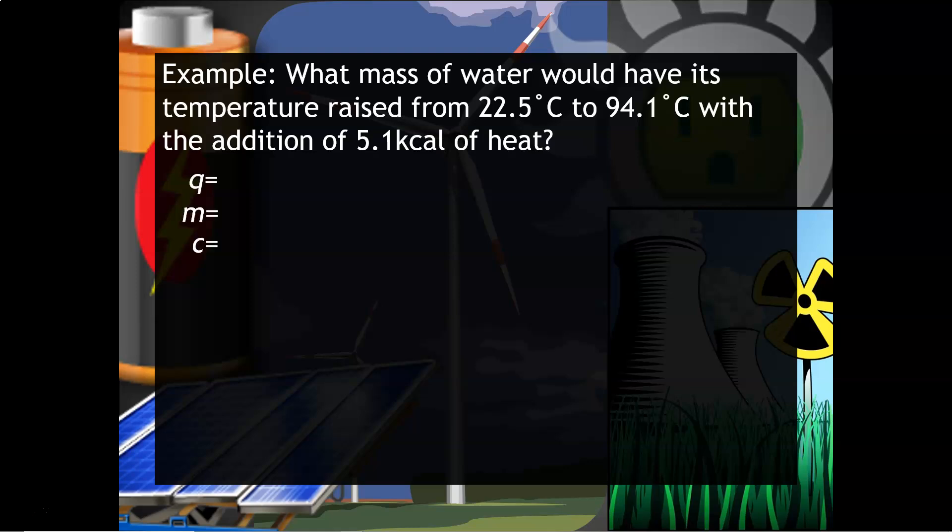Again, Q, M, C, delta T. Q is 5.1 kilocalories, but if you notice, that unit is not appropriate. We need to convert that into calories. Next step is mass. I'm looking for that because it does say what mass of water. C, we want to use the specific heat of water.